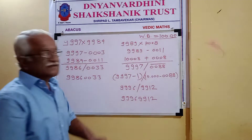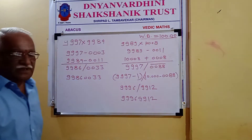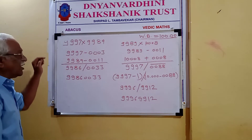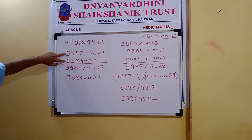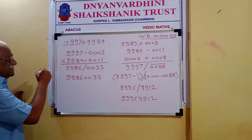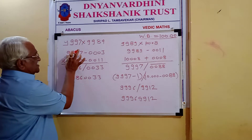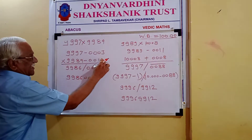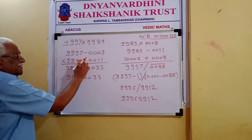So our working base is 10,000. Here you see that 4 zeros are there, so 4 digits should be on the right side. Now we have written 9,997 into 9,989. The difference between each figure and the working base is 3 and 11. Here both figures are below 10,000, so we write minus.